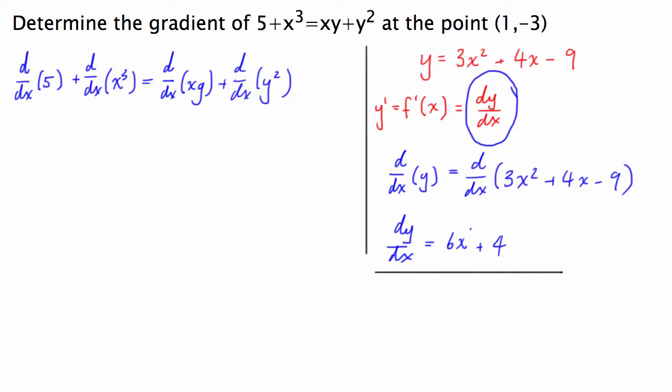To start with on the left hand side it's going to be fairly self-explanatory because you can just use your plain vanilla differentiation techniques. The derivative of a constant with respect to x is going to be equal to 0. The derivative of x cubed with respect to x is just 3x squared. Now this is where it becomes a little bit more tricky.